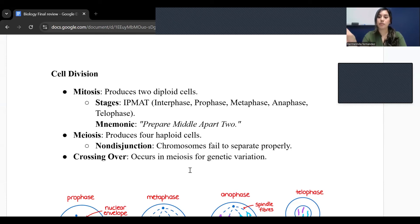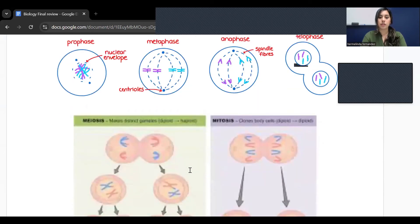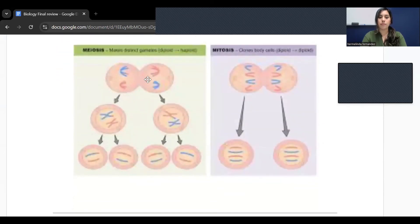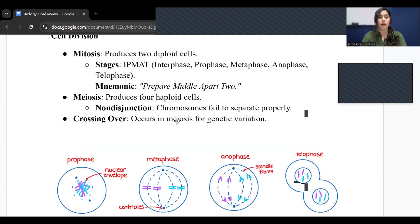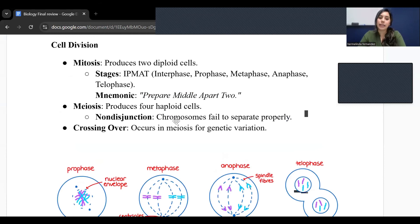Meiosis produces four haploid cells. Here are two examples - you have your mitosis with two cells, and then meiosis produces those four haploid cells and also has non-disjunction. Non-disjunction is where the chromosomes fail to separate properly. If they're junction, they're separating correctly. Non-disjunction, they're not able to. So N for not able to separate properly.